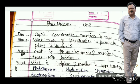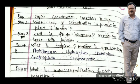Question number one: define coordination and mention its types. Question number two: what types of coordination are present in plants and humans? Question number three: what are phytohormones — mention their types with functions. Question number four: what is tropism — mention its types with examples: phototropism, hydrotropism, chemotropism, geotropism, and thigmotropism.